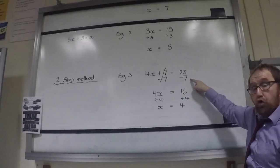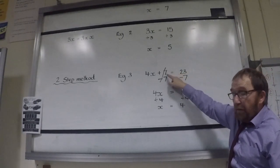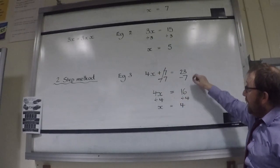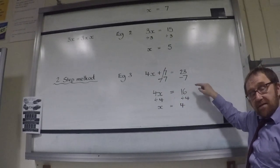What I do to one side, I do to the other. That cancels out the 7s to leave 4x from here, and 23 minus 7 equals 16.